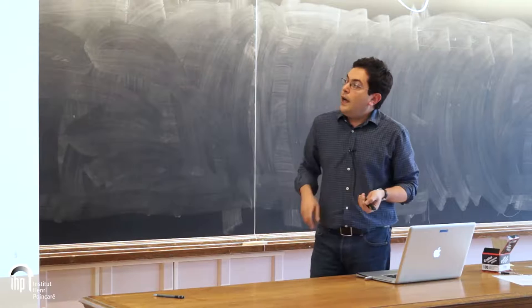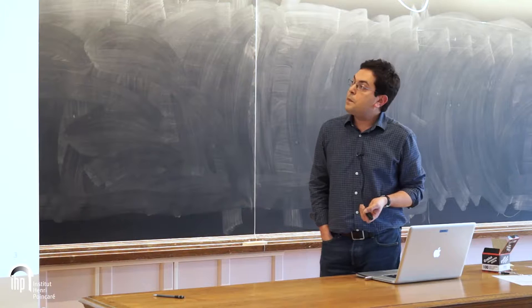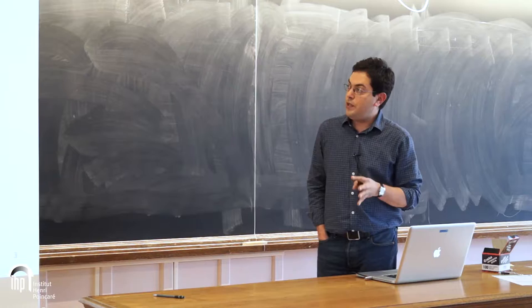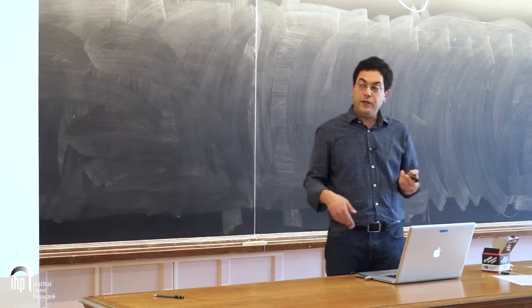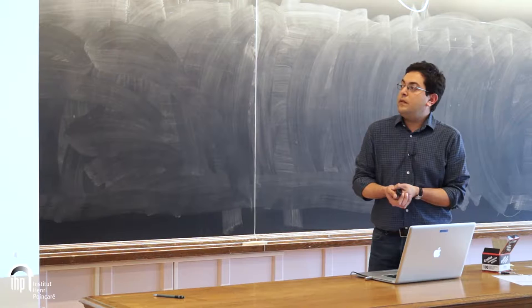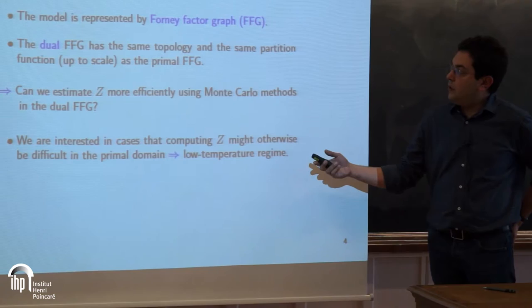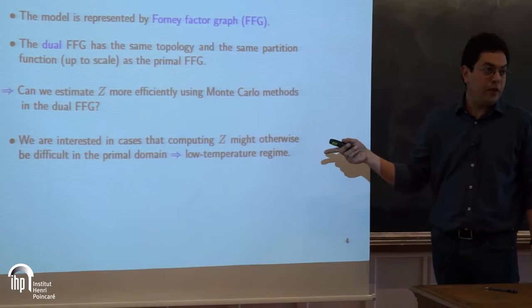We use factor graphs to represent the distribution, and mainly focus on Forney factor graphs. Then we look at the dual of the Forney factor graph, which has the same topology as the original graph and the same partition function up to a scale factor. We want to know: can we estimate Z more efficiently with Monte Carlo methods in the dual factor graph? I'm interested in cases where this computation is difficult in the primal domain — the main problem is computing it in the low temperature region, where computations are harder than in the high temperature region.